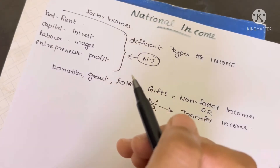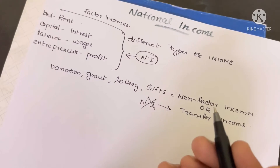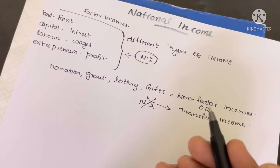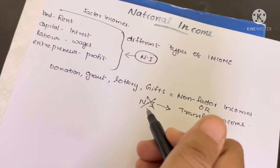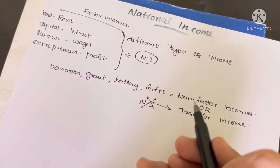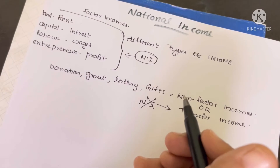Non-factor income: there are certain money receipts which do not involve any sacrifice on the part of the recipient. For example, gift, donation, charity, tax, and fine. This is non-factor income.